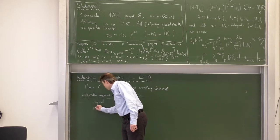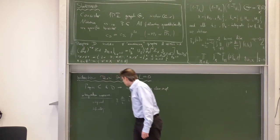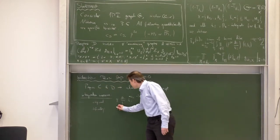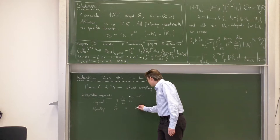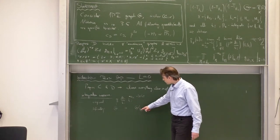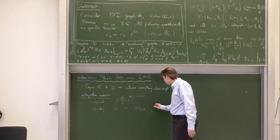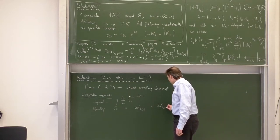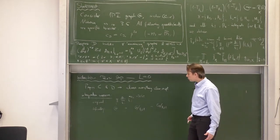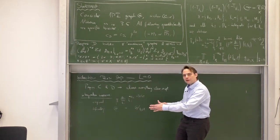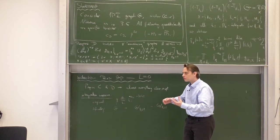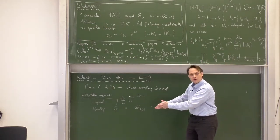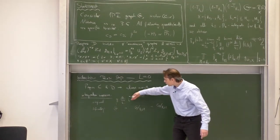What is the difficulty with this way to write the measure? The difficulty comes into play if we have counterterms. If you have counterterms, imagine you want to combine a graph G and counterterm graphs, where one subdiagram h is reduced to a point and replaced by a counterterm, or some other subgraph is replaced by a counterterm insertion.